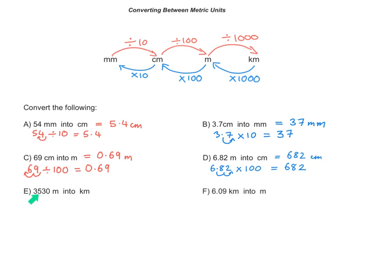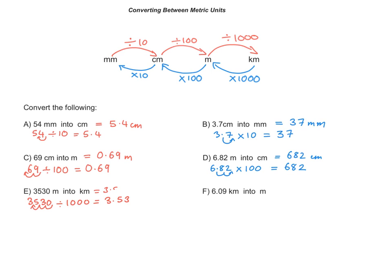Now: 3,530 metres into kilometres. I am converting smaller units into larger units, so I will divide. To convert metres to kilometres, I divide by 1,000. So 3,530 divided by 1,000 equals 3.53 — I've moved the decimal place three places to the left. I haven't written the trailing zero because it is not needed. So 3,530 metres is equivalent to 3.53 kilometres.